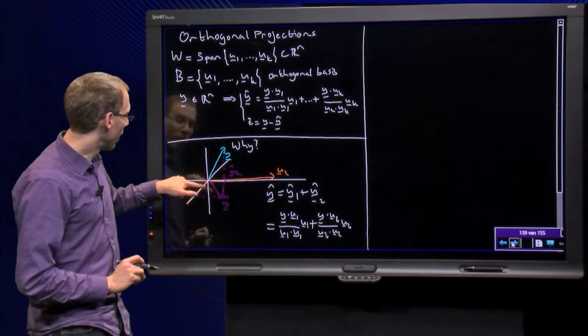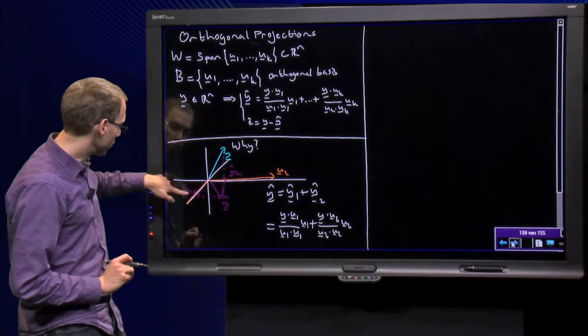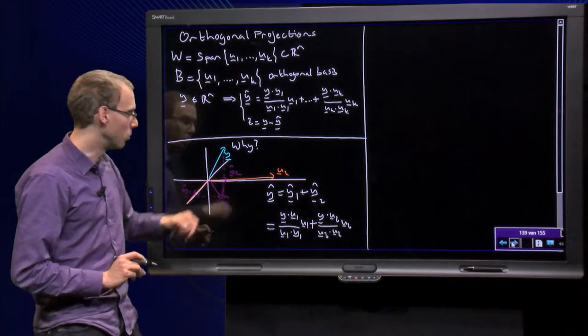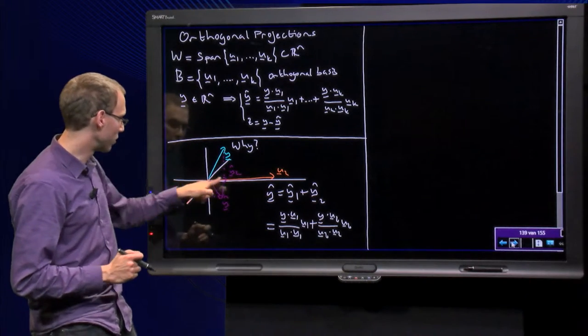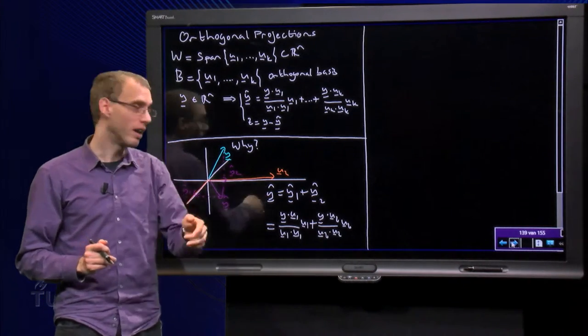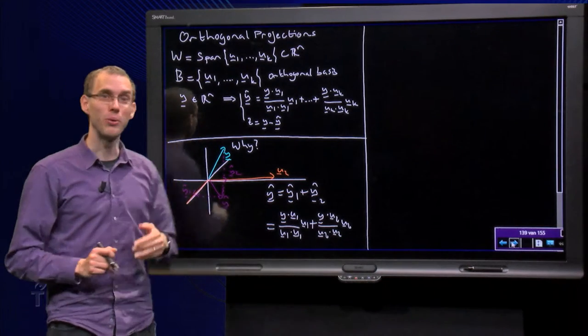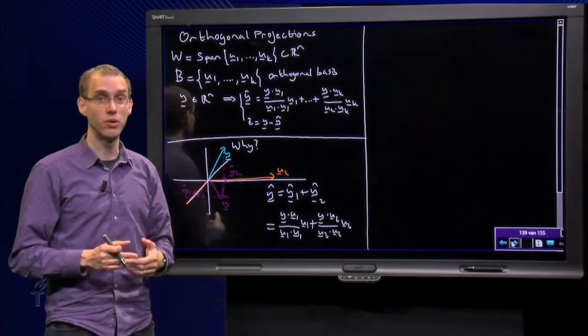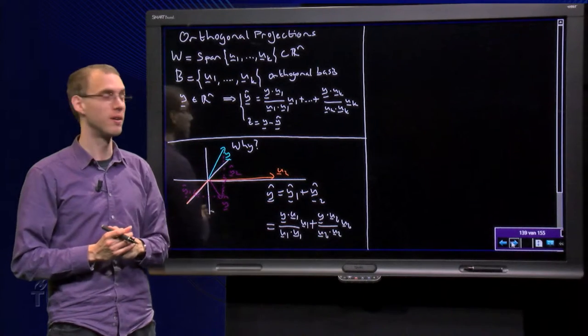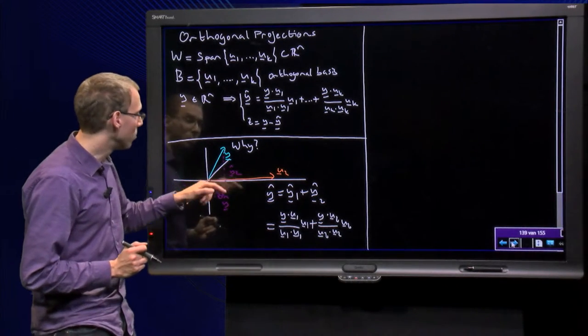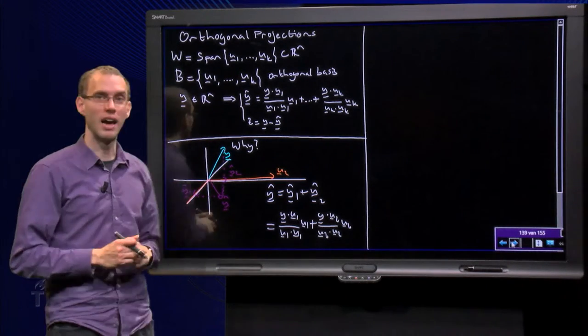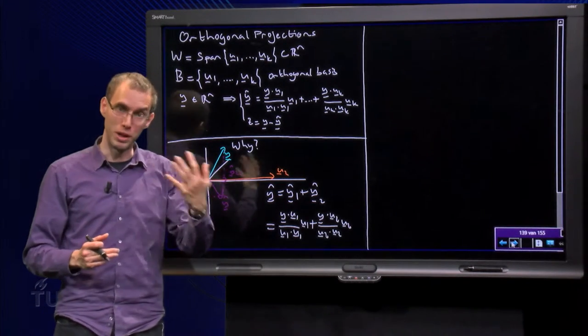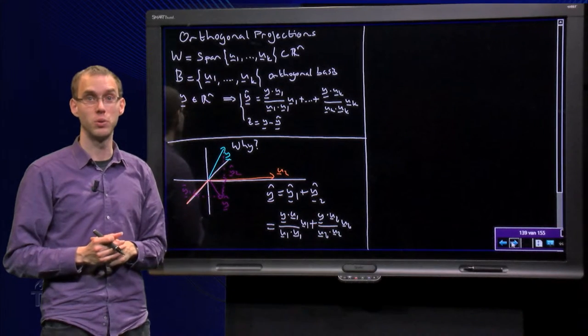Well, y-hat consists of y-hat 1 over here and y-hat 2. So you can decompose y-hat into two components, y-hat 1 and y-hat 2. But y-hat 1 is just a projection of y on the line through u1, so we know how to compute y-hat 1. And y-hat 2 is just a projection of y on the line through u2.